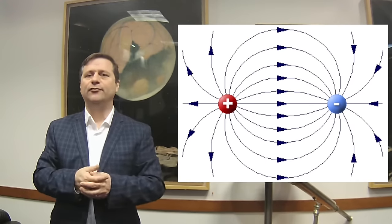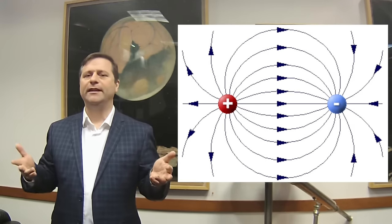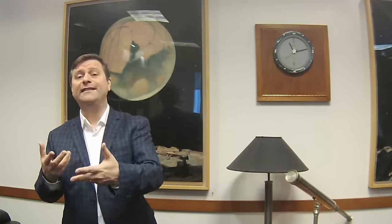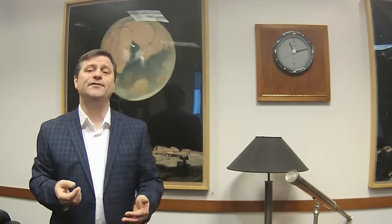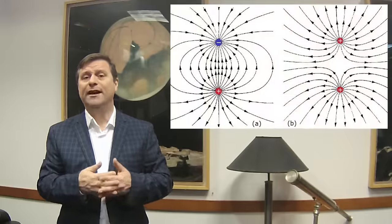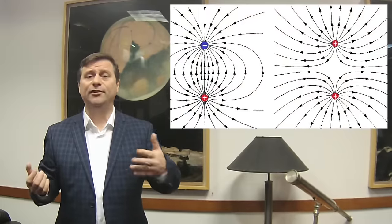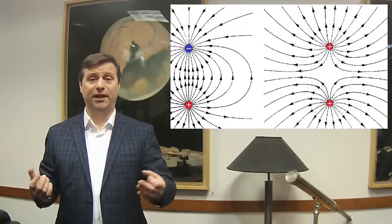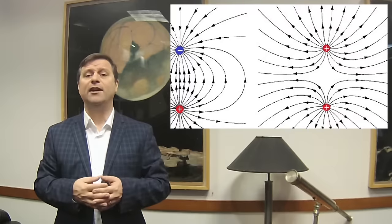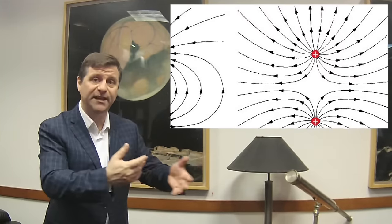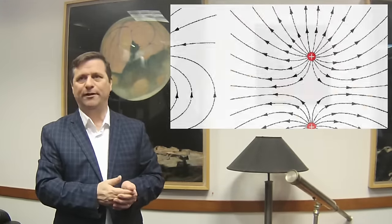In introductory electromagnetic or gravity textbooks, you see the concept of the field line, which was developed by Michael Faraday as a helpful visual tool. Many people still use this as a dominant way of teaching the concept of an electric field, and we still use the term 'electric field' that Michael Faraday came up with.